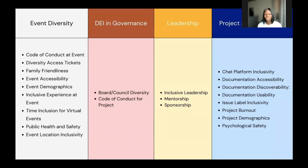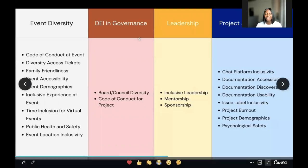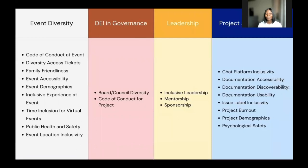Another focus area which our DEI metrics cover is governance, where we have board and council diversity and code of conduct for all open source projects. Then we have another focus area specific to leadership that highlights inclusive leadership, mentorship, and sponsorship to upcoming open source projects. Then we have the project and community metrics that highlight areas like chat platform inclusivity, documentation accessibility, discoverability and usability, and issue label inclusivity — as well as project burnout, project demographics, and project psychological safety for members and maintainers.